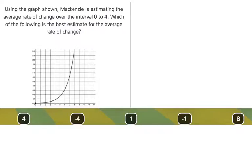Using the graph below, McKenzie is estimating the average rate of change over the interval 0 to 4. Which of the following is the best estimate for the average rate of change?